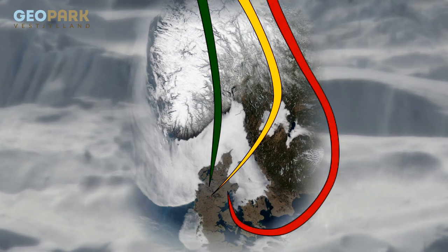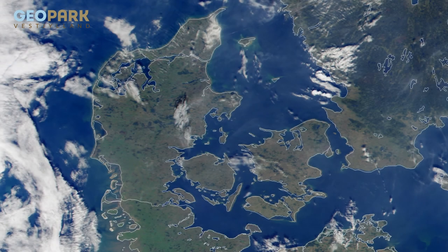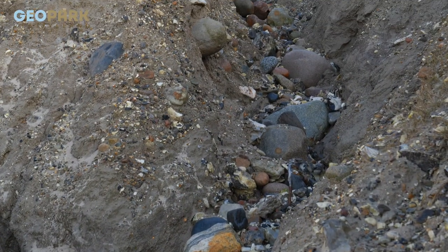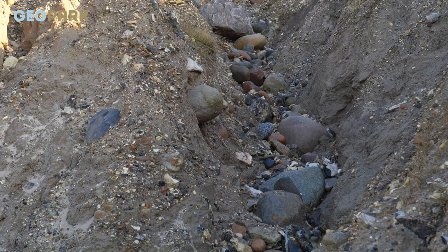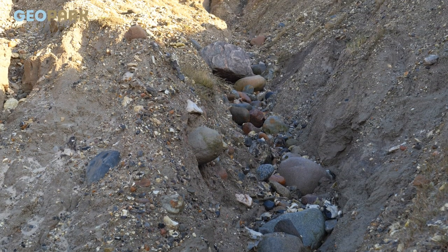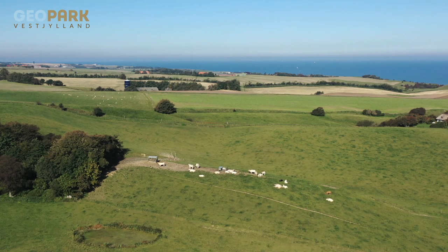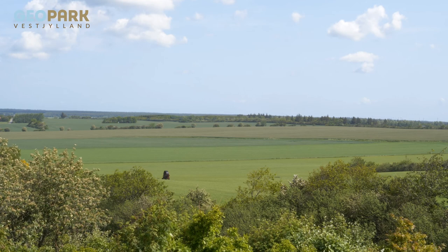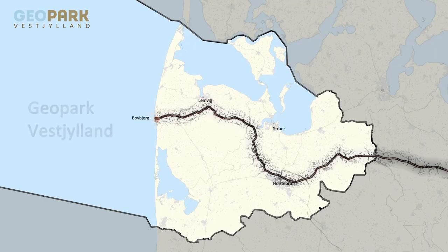Most of the landscapes in Geopark Western Newland were formed during the main glacial advance that took place between 23,000 and 21,000 years ago. Large glaciers pushed their way through the landscape bringing clay, sand and stones with them. The glaciers formed terminal moraines and meltwater plains that are important elements of the landscapes in the Geopark today.